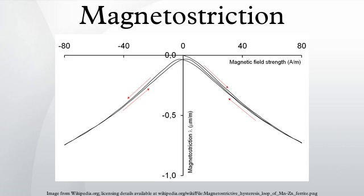The effect was first identified in 1842 by James Joule when observing a sample of iron. This effect causes energy loss due to frictional heating in susceptible ferromagnetic cores. The effect is also responsible for the low-pitched humming sound that can be heard coming from transformers.